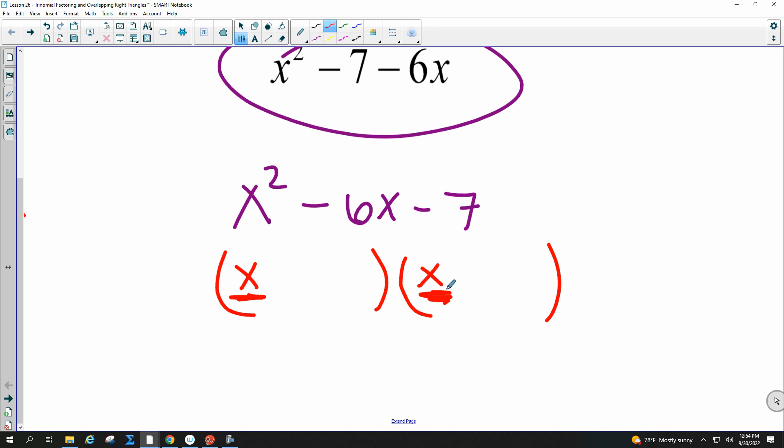This times this has to equal this. So this has to be x times x, because that has to equal x squared. And then your next two terms, they have to do two things. They have to multiply to be whatever is your last number. And they have to add to be whatever is this middle term.